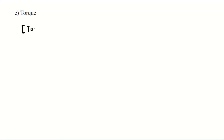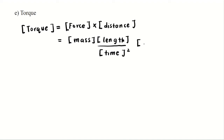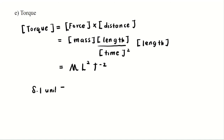The last question is torque. Torque is a physical quantity, so make sure you write it in a bracket. It is the product of force times distance. For force, we can express it in terms of basic quantities — that is mass times length divided by time squared — and don't forget to multiply again by length, referring to the distance. So from here, we can denote it as big M L squared and T to the negative 2. The unit is kg meter squared per second squared.